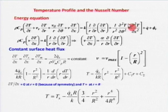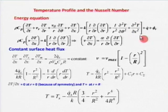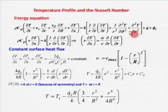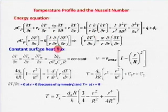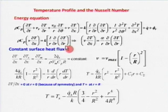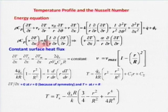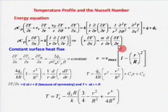Temperature is not a function of theta and not a function of x in the developed sense. On the right-hand side I am left with (1/r)(∂/∂r)(∂T/∂r). So the simplified equation becomes: V(∂T/∂x) = (K/ρC_P) × (1/r)(∂/∂r)(∂T/∂r), which equals α/r × (∂/∂r)(∂T/∂r).